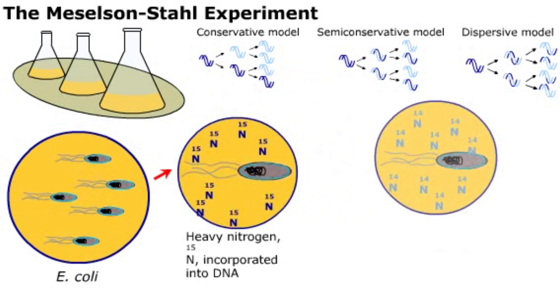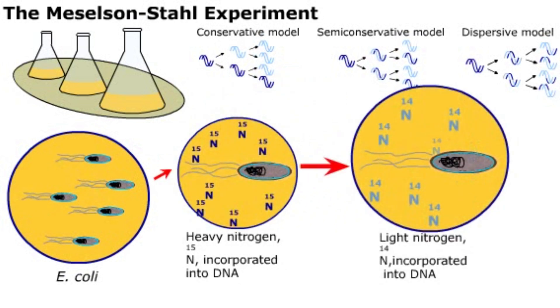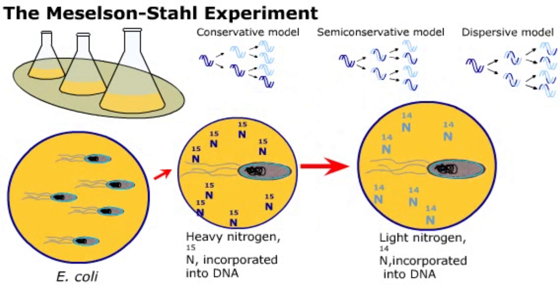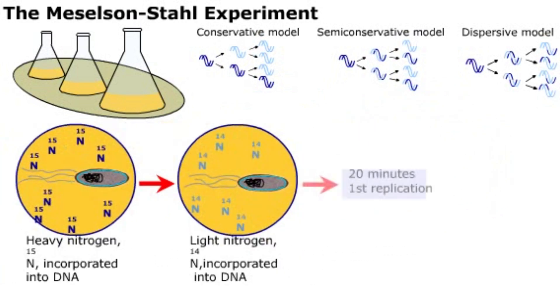Next, they switched the bacteria to media containing a lighter nitrogen isotope. Since bacteria divide about once every 20 minutes, the first round of replication was complete after 20 minutes, and any newly synthesized DNA was made with the lighter nitrogen.